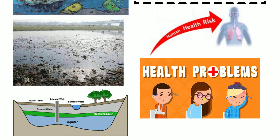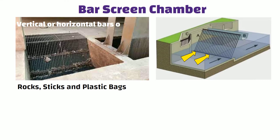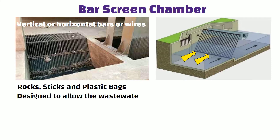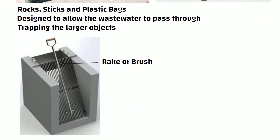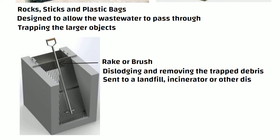Now let us discuss each component of STP in detail. Bar Screen Chamber: as the waste water flows through the bar screen chamber, any large objects such as rocks, sticks and plastic bags are trapped by the bar screen. The bar screen consists of a series of vertical or horizontal bars or wires spaced close together, designed to allow waste water to pass through while trapping larger objects. A rake or brush moves along the surface of the bar screen, dislodging and removing the trapped debris, which may then be sent to a landfill, incinerator or other disposal facility.